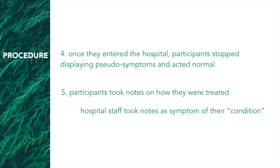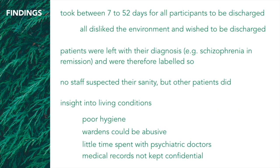Participants took notes on how they were treated. Interestingly, hospital staff took notes saying that writing in their diary was a symptom of their condition. It took between seven to 52 days for all participants to be discharged — they were there for a very long time even though they didn't have a mental disorder. They all disliked the environment and wished to be discharged, but were forced to stay for an average of around 32 days. Patients were left with diagnoses of schizophrenia in remission and were labeled as such, which gets left in your record for the rest of your life and can really lead to stigma and affect people's ability to get jobs.